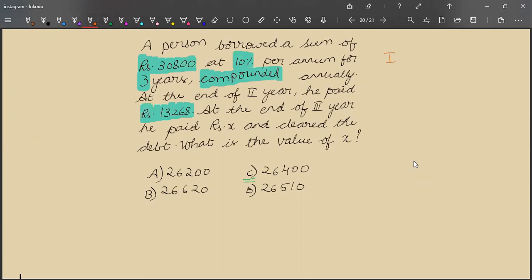So for first year, the interest should be 10% of 30,800, which is 3,080. And second year, the interest should be first year interest plus again 10% on 30,800, which is another 3,080.